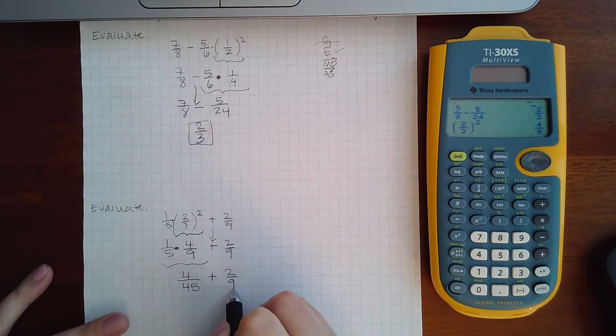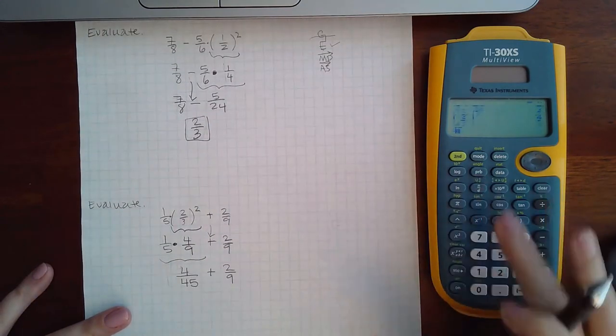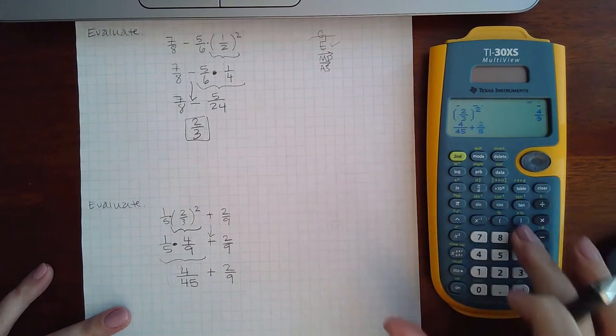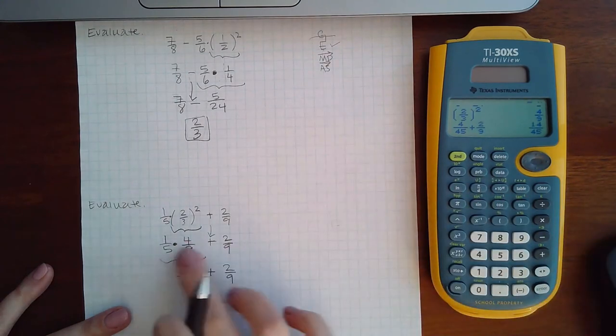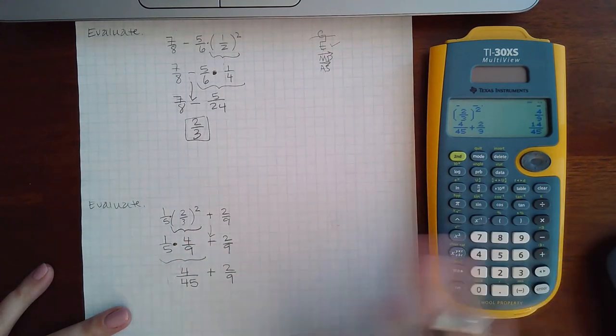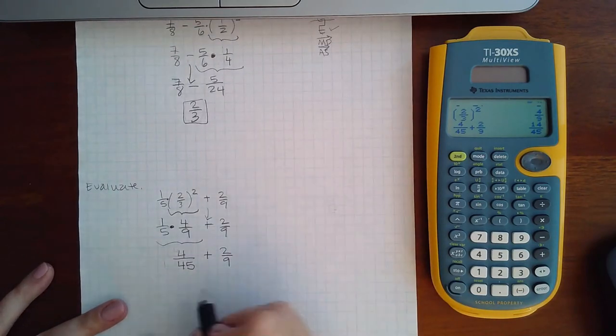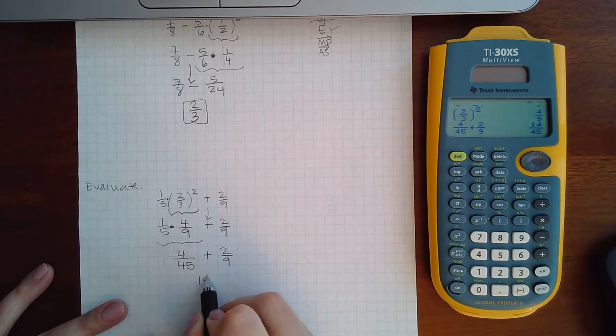Then I need to add the two over nine so four over 45 plus two over nine. If you wanted to do the multiplication in the calculator you could have, you still would have ended up with four over 45. My final answer is 14 over 45.